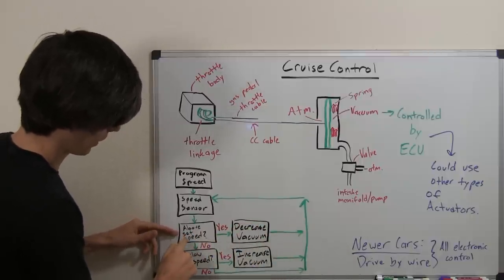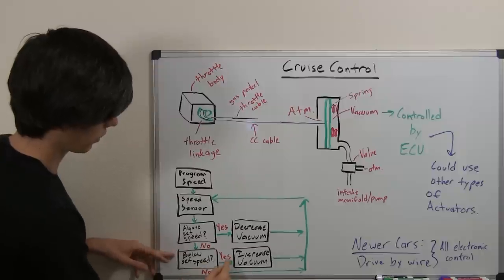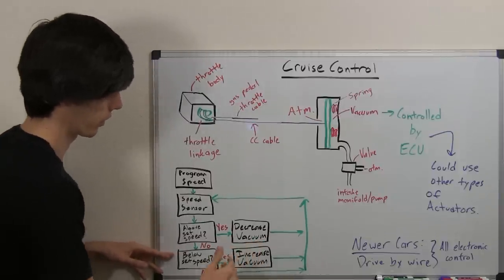If you're not above the set speed, it will say okay well am I below the set speed. So it checks and says okay yes we are below the set speed. We want to be going faster.